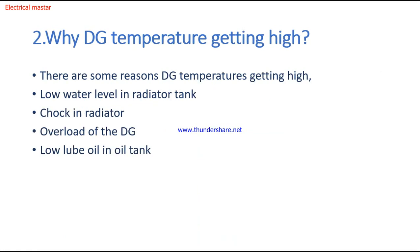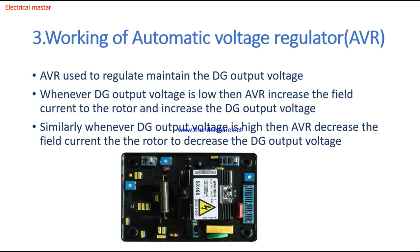The second question: why does the diesel generator temperature get high? There are some reasons. First, low water level in the radiator tank — the radiator tank cools the engine, so low water will cause high temperature. Second, a choked radiator. Third, overload of the DG. Fourth, low lube oil level in the oil tank. These four conditions will make the diesel generator temperature high.